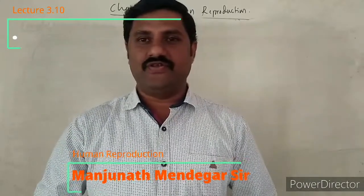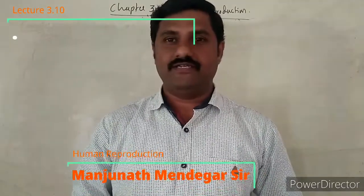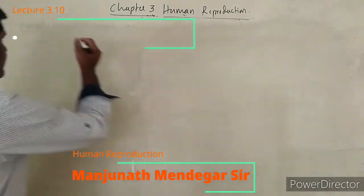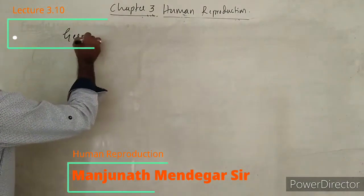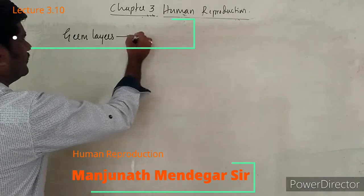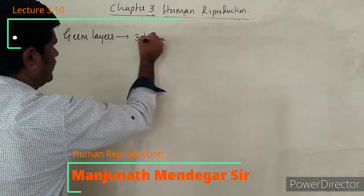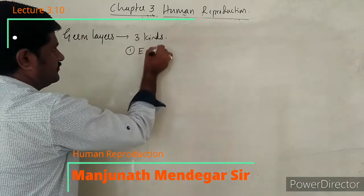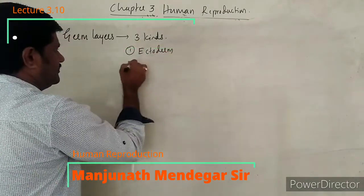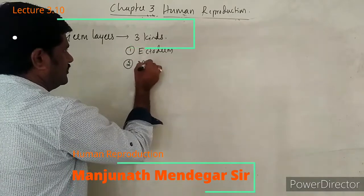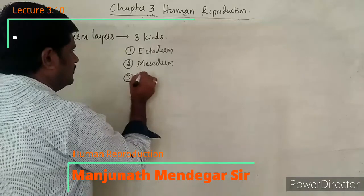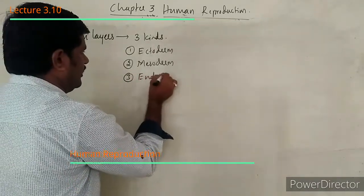Dear students, in this video we are going to learn how the germ layers are formed. These germ layers are of three kinds: the first one is ectoderm, the second one is mesoderm, and the third one is endoderm.